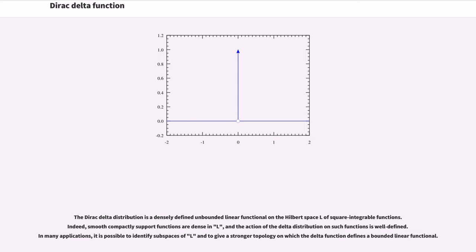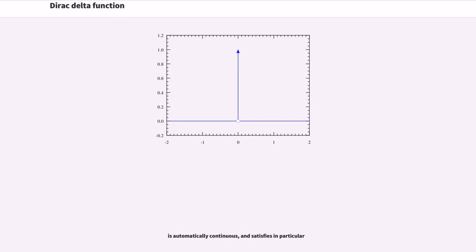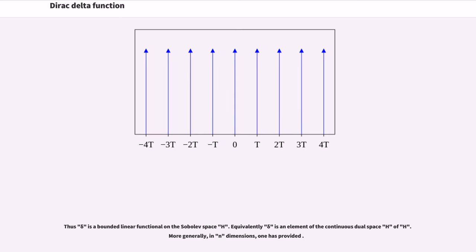The Dirac delta distribution is a densely defined unbounded linear functional on the Hilbert space L² of square integrable functions. Smooth compactly supported functions are dense in L², and the action of the delta distribution on such functions is well defined. In many applications, it is possible to identify subspaces of L² and give them a stronger topology on which the delta function defines a bounded linear functional. The Sobolev embedding theorem implies that any square integrable function f such that its derivative is also square integrable is automatically continuous. Thus delta is a bounded linear functional on the Sobolev space H¹.